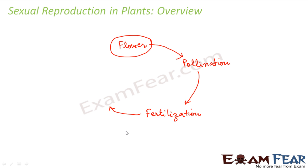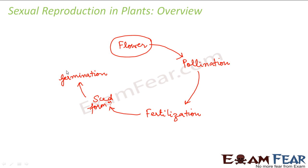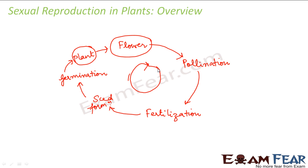Once the zygote is formed, it divides repeatedly and becomes an embryo. Once the embryo is formed, the ovule converts itself into a seed — seed formation takes place. The seed remains inactive during unfavorable conditions, but when favorable conditions are present, the seed develops into a seedling, and the seedling develops into a bigger plant — this is germination. Once the plant grows and has flowers again, pollination, fertilization, seed formation, and germination repeat, and so this cycle keeps on continuing.